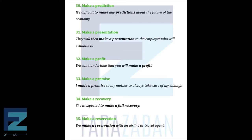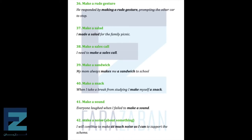Make a presentation — They will then make a presentation to the employer who will evaluate it. Make a profit — We can't undertake that you will make a profit. Make a promise — I made a promise to my mother to always take care of my siblings. Make a recovery — She is expected to make a full recovery. Make a reservation — We make a reservation with an airline or travel agent. Make a rude gesture — He responded by making a rude gesture, prompting the other car to stop. Make a salad — I made a salad for the family picnic.